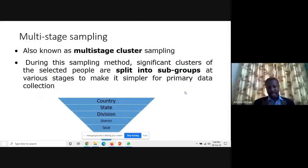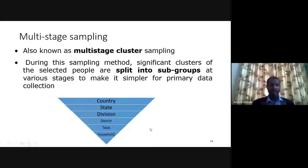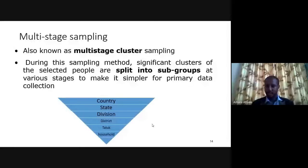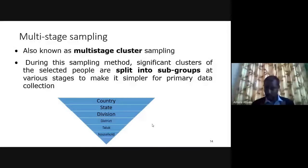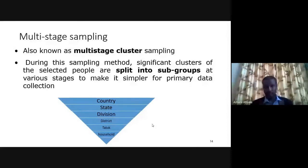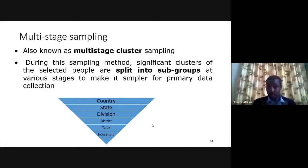Multi-stage sampling is also known as multi-stage cluster sampling because we are clustering. Significant clusters of selected people are split into subgroups at various stages to simplify primary data collection. You can start at the country level — India — then state — Karnataka — then division, then district — say Udupi — then taluk, then down to the household level, depending on how detailed you want to go.